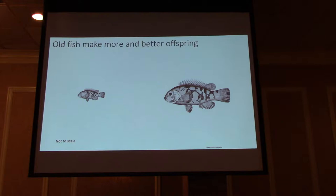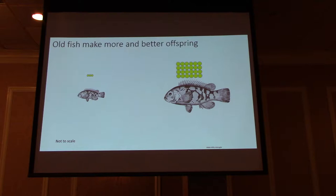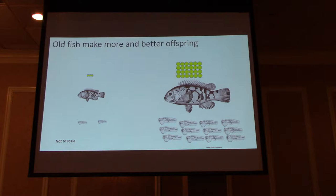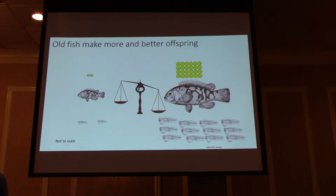This is important because old fish make more and better offspring. Here we have two tautog, a small one and a large one — both mature females. The small one makes some eggs, the large one makes a lot more eggs, and larger eggs. This impacts the offspring these fish have. On a gram-per-gram basis, equivalent spawning stock biomasses are not actually equivalent for the number of offspring they're going to have. If the stock is primarily composed of young adults versus old adults at the exact same weight, they're going to have different contributions to the next generation.